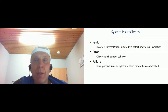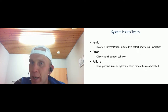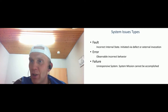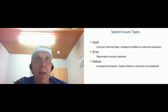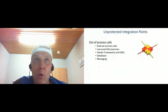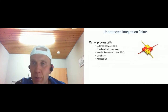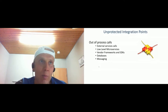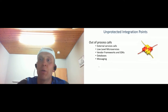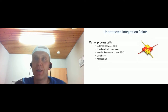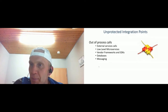Let's go through the stability anti-patterns. An anti-pattern is a way to build the system or architecture that makes problems even worse — so if something bad happens, the architecture amplifies the problem. The first anti-pattern is unprotected integration points. Integration points are all places in the system that communicate outside: external service calls, low-level microservices, remote framework calls, database access, messaging — basically all that goes outside.